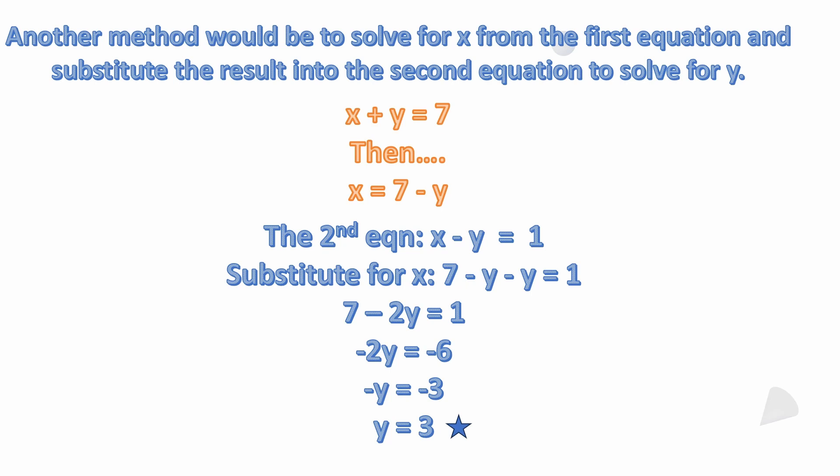Now from here we can divide both sides of the equation by two. Minus two y divided by two is minus y, and minus six divided by two is minus three. So minus y equals minus three. Again, we multiply both sides by minus one, which gives us y equals three.